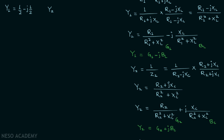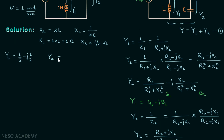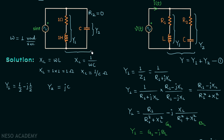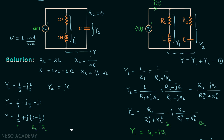Since R2 = 0 and XC = 1/C, substituting these values gives Y2 = jXC = jC. The total admittance Y = Y1 + Y2 = (1/2 - j/2) + jC, which simplifies to Y = 1/2 + j(C - 1/2). So the conductance is 1/2, and the net susceptance BC - BL equals C - 1/2, where BC = C and BL = 1/2.